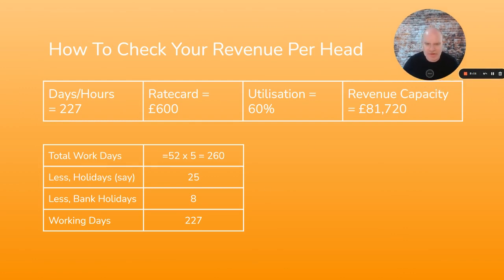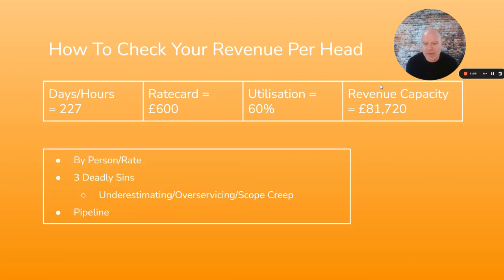For this person at that rate card and utilization, the revenue capacity is just over £81,000 — just under £82,000. That would be your revenue per head. There's a little bit of spurious accuracy going to that level of detail, but it's a useful ballpark. A word of warning though — a few caveats: this calculation needs to be done by person.